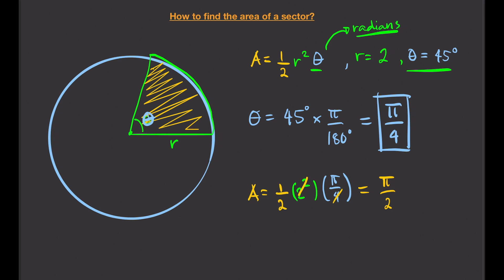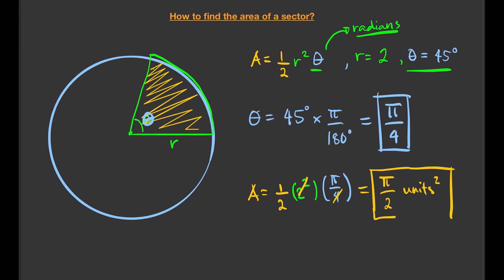So our area is π/2 units squared, where the units depend on the unit of the radius. If R is in meters, that's meters squared; if R is in inches, that's inches squared. That's how you compute the area of a sector.